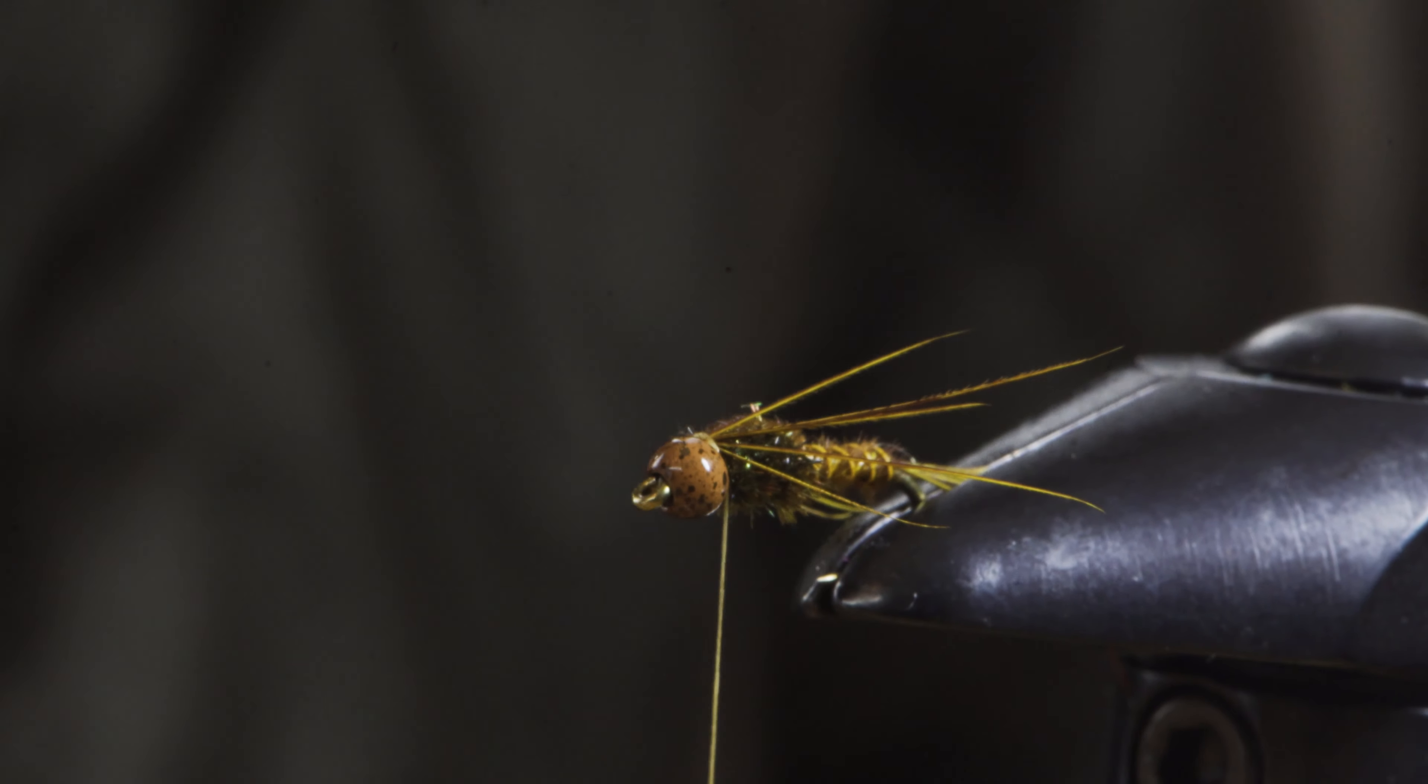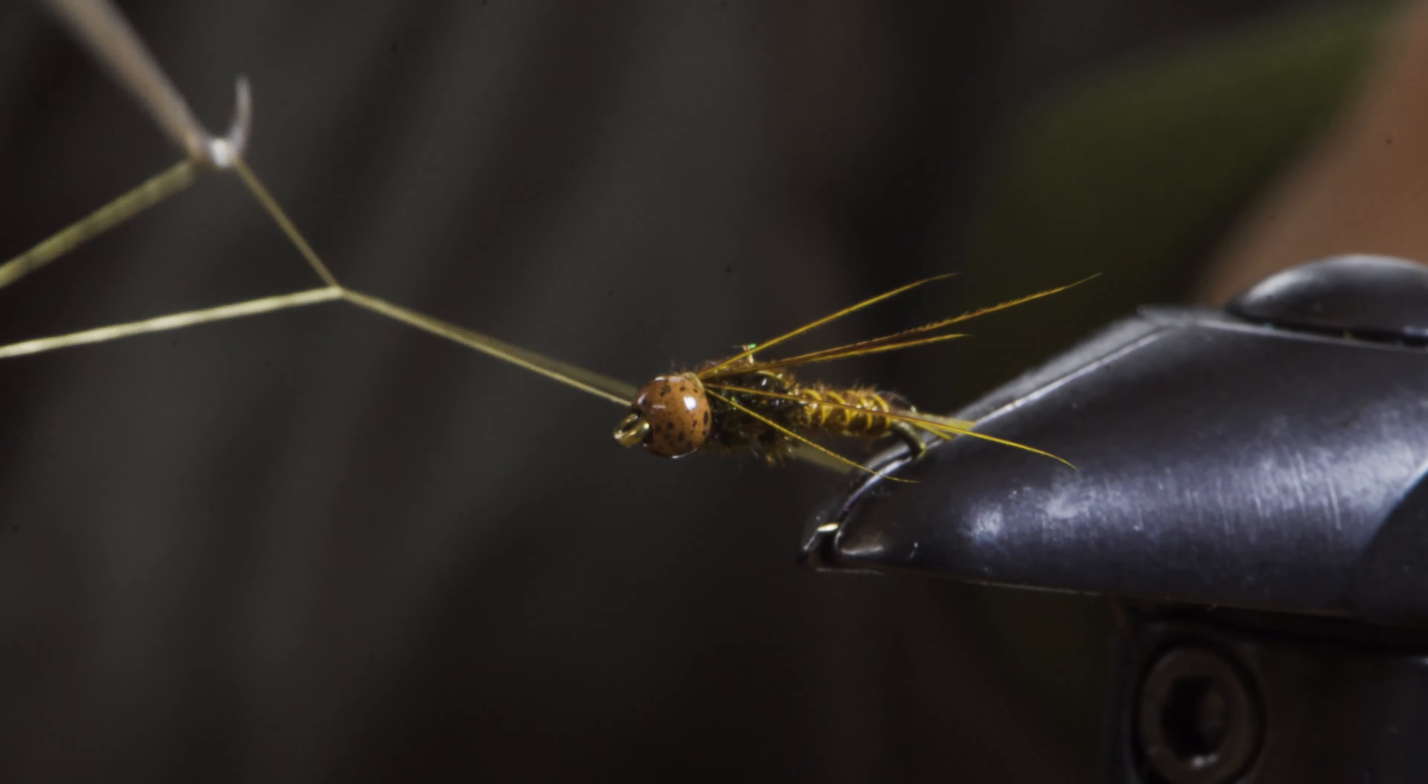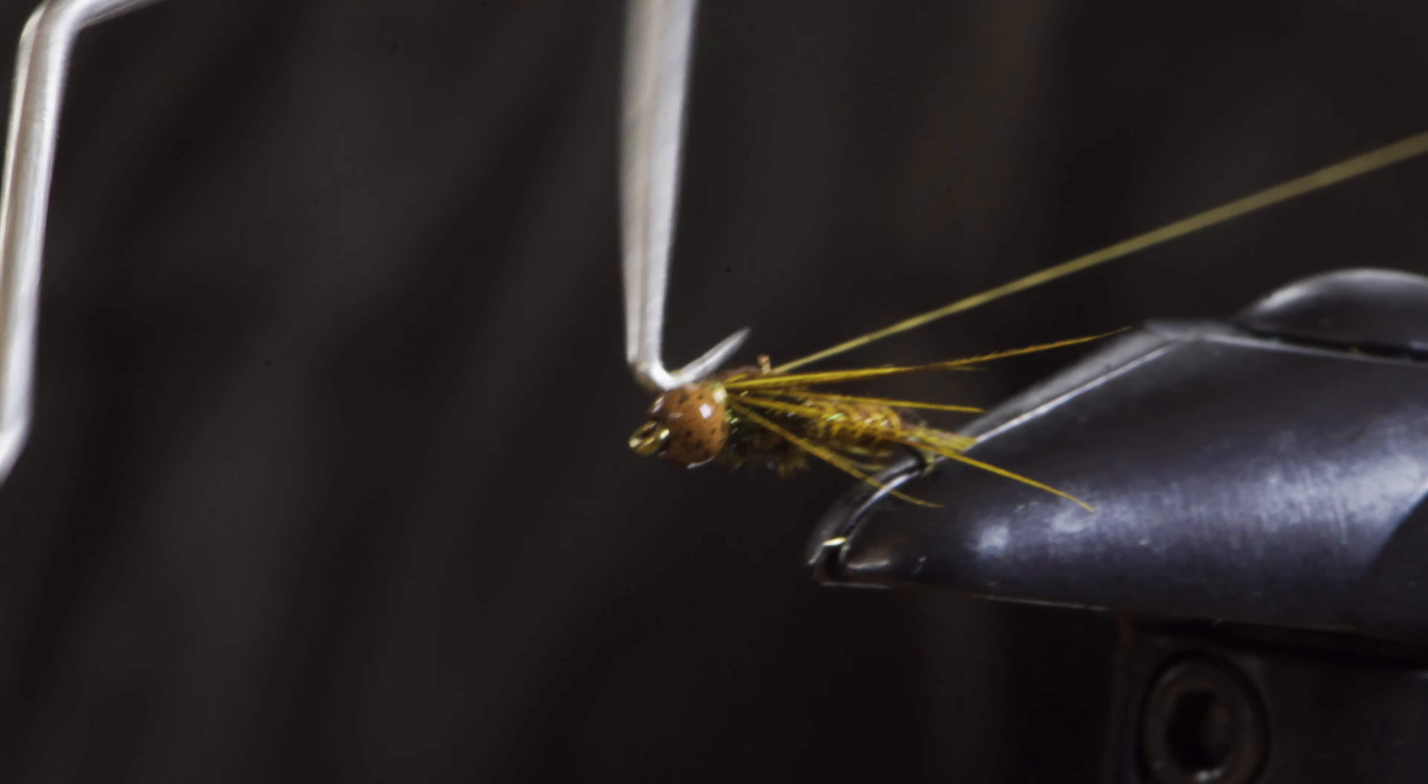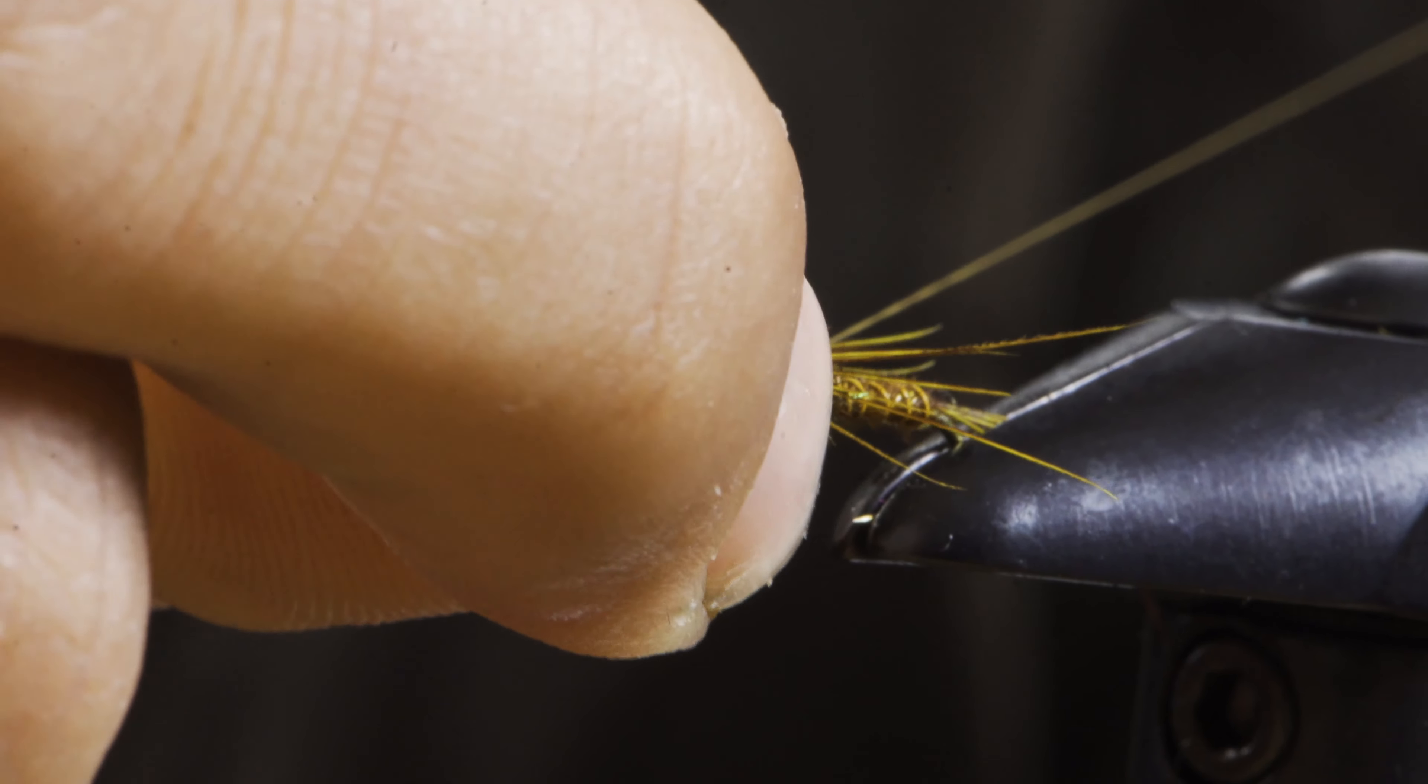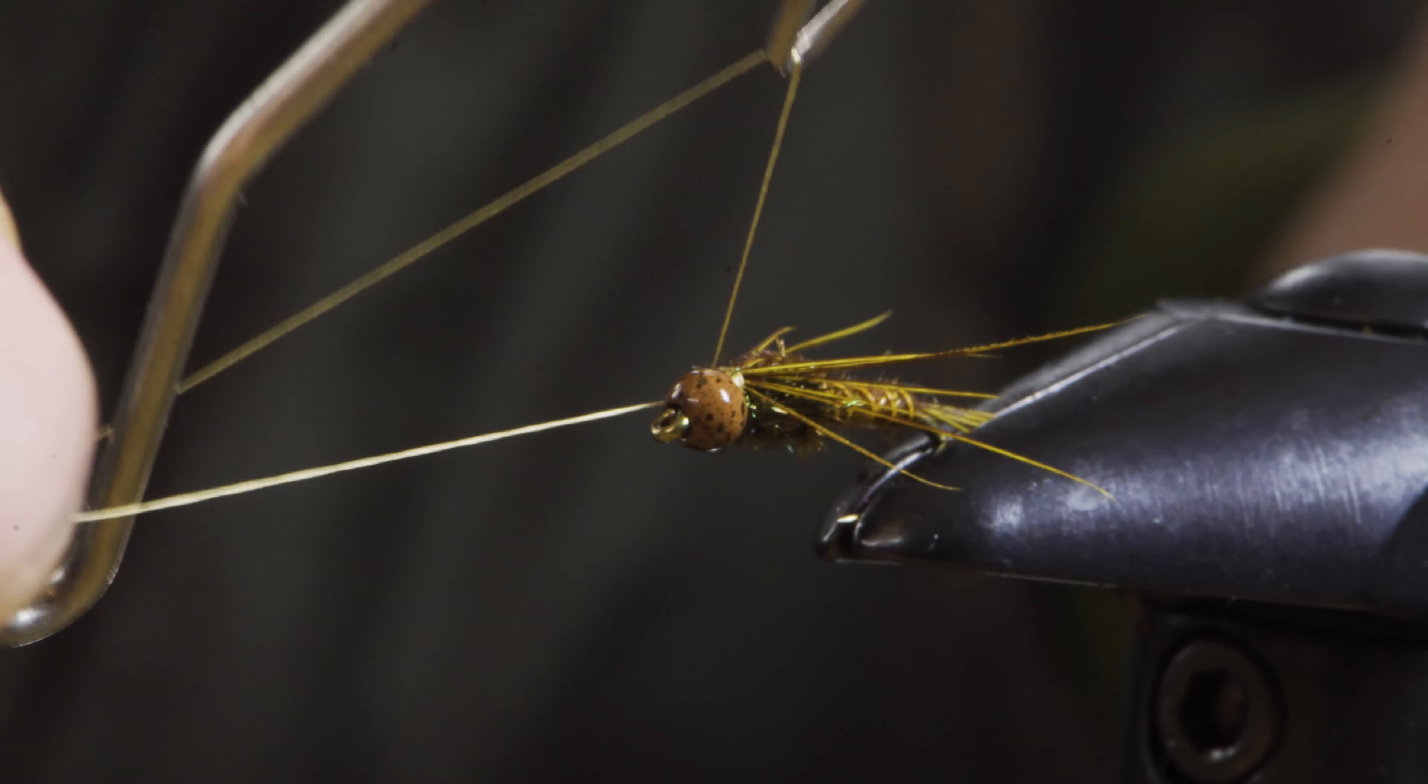And then I'm going to take my whip finish tool, throw two quick whip finishes behind my bead. I usually just throw three reps, make sure everything's seated. One more.